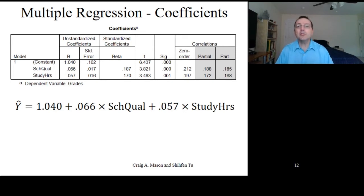Now, while we're here, we can also look at the t-test to determine whether the effect of school quality and study hours is statistically significant or not equal to 0. The t-test for the intercept term was equal to 6.437, while the t-test for the school quality effect was 3.821, and the t-test for study hours was 3.483.